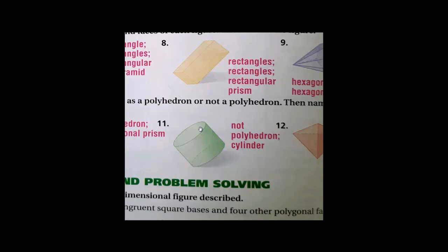Question eleven — the two bases are circles, so it's not a polyhedron. When we have two circular bases, we call it a cylinder.